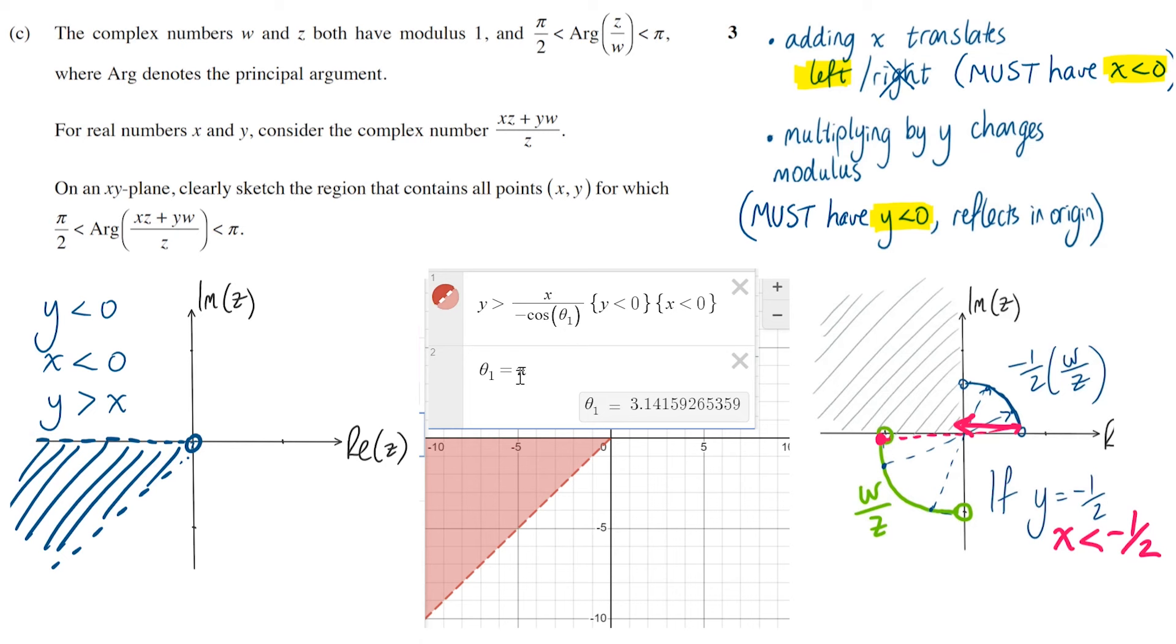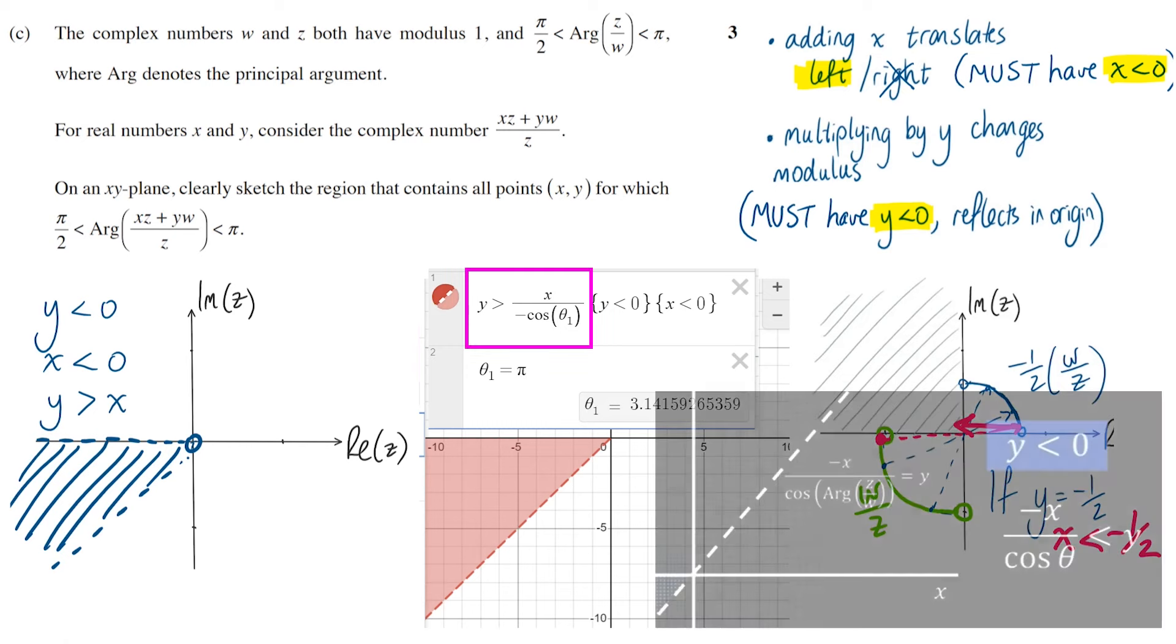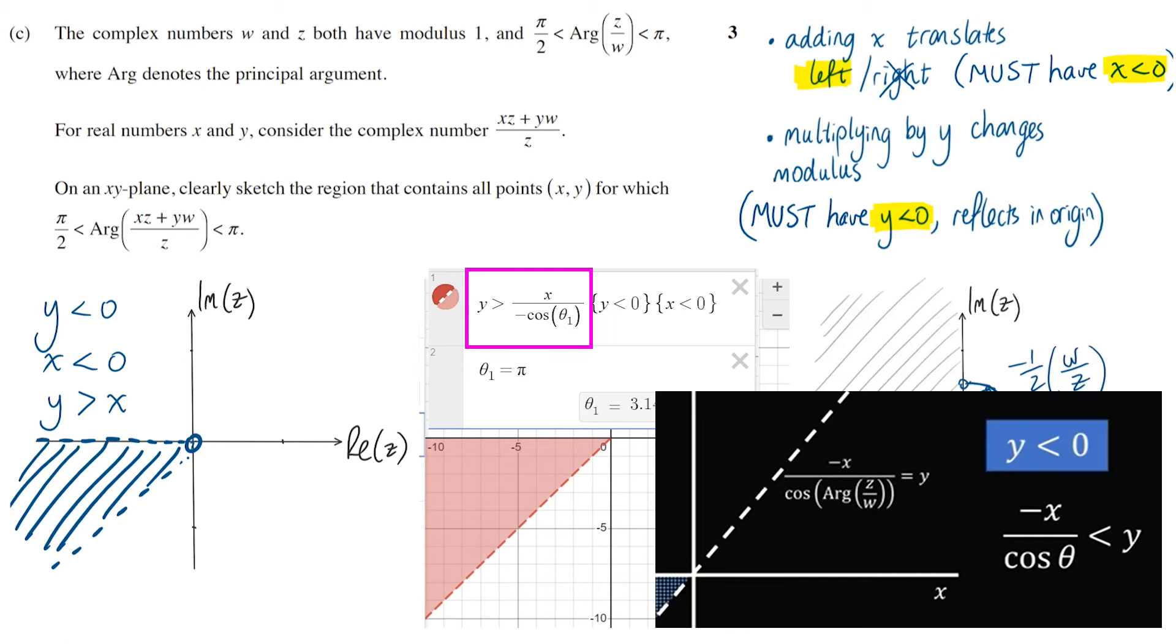In the Mind Your Decisions video and in the other ones I saw online, they've given the relationship between Y and X, but also included a cos θ term in there where θ depends on the values of Z and W, which is totally correct because it does. But then in the question we're asked to sketch a subset of the XY plane. So it should be enough to have Y in terms of X, not Y in terms of X and θ, which depends on Z and W.